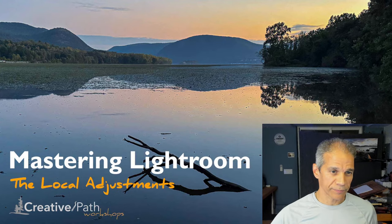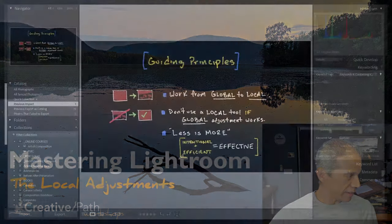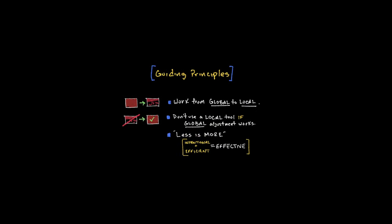Let me switch to my monitor here. These are some main concepts — let's call them guiding principles — that I think are important when working with local adjustments in particular. The first one is: always think about working from a global to a local level. Always start with the entire picture and then decide what you need to work on at a local level. It's easier to maintain a sense of direction and cohesiveness that way.